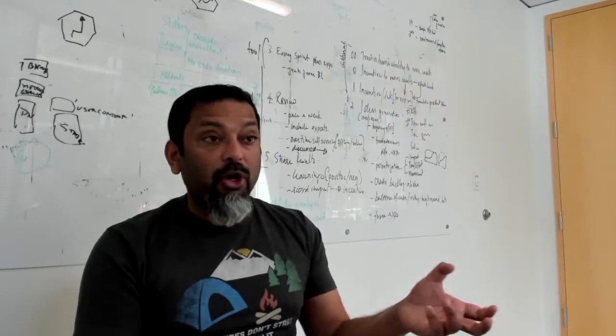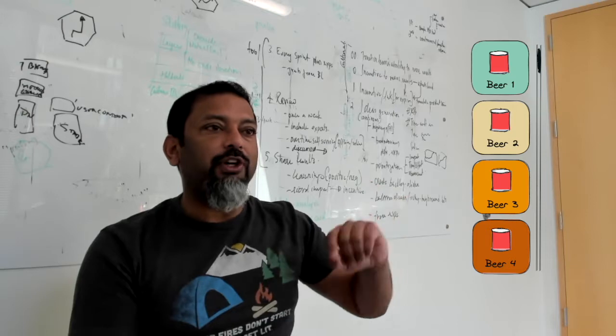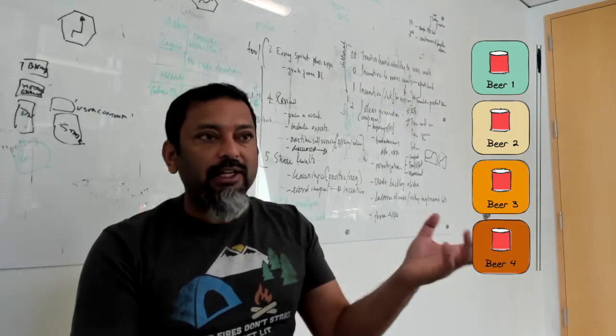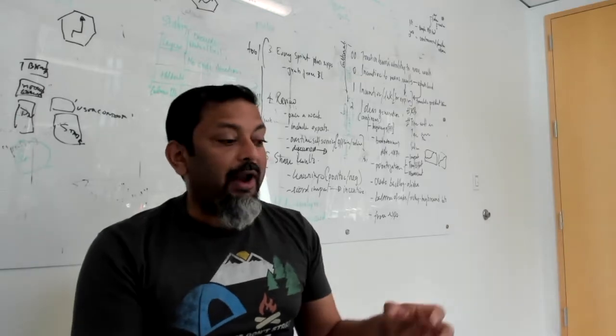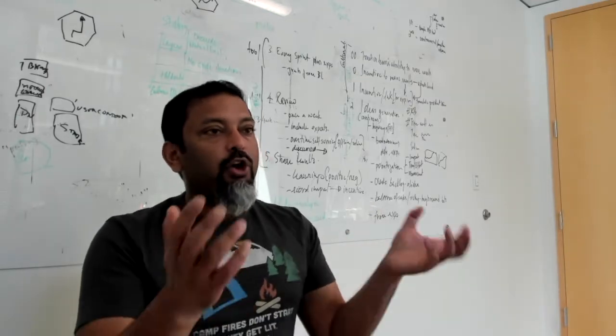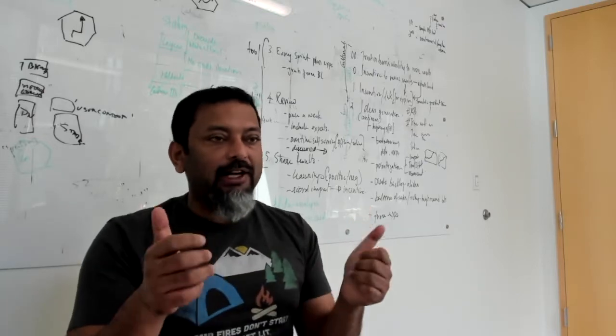They had the hypothesis that switching to a vertical feed, which is what most users are used to when they play with something like Instagram, would be easier for people to get used to. They ran an experiment and the overall metrics for the experiment actually looked positive, which confirmed and validated their hypothesis.